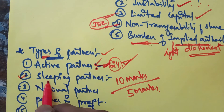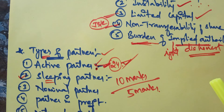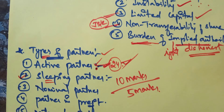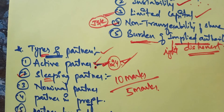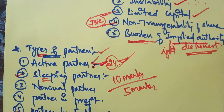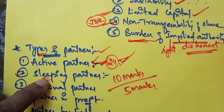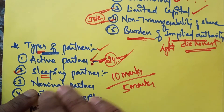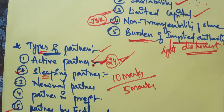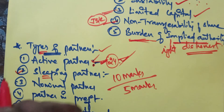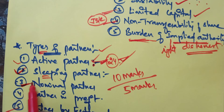The next type is the sleeping partner, also called a dormant partner. A sleeping or dormant partner invests capital and has participation in management just like an active partner. But the difference is that the general public or outsiders may not know that he is a partner — he is hidden. He has the same rights and duties as other partners, but the public doesn't know his identity.